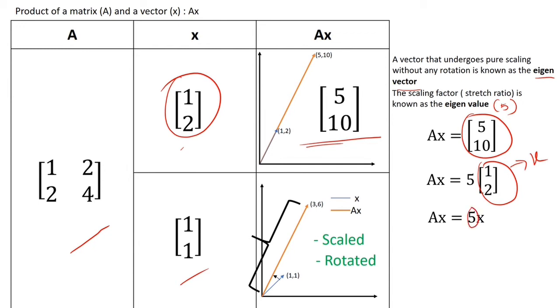Let me generalize it by putting a lambda here. And do you recognize this? This is the famous eigenvalue equation that you see in most of the textbooks. Remember these two important keywords, scaling and no rotation.